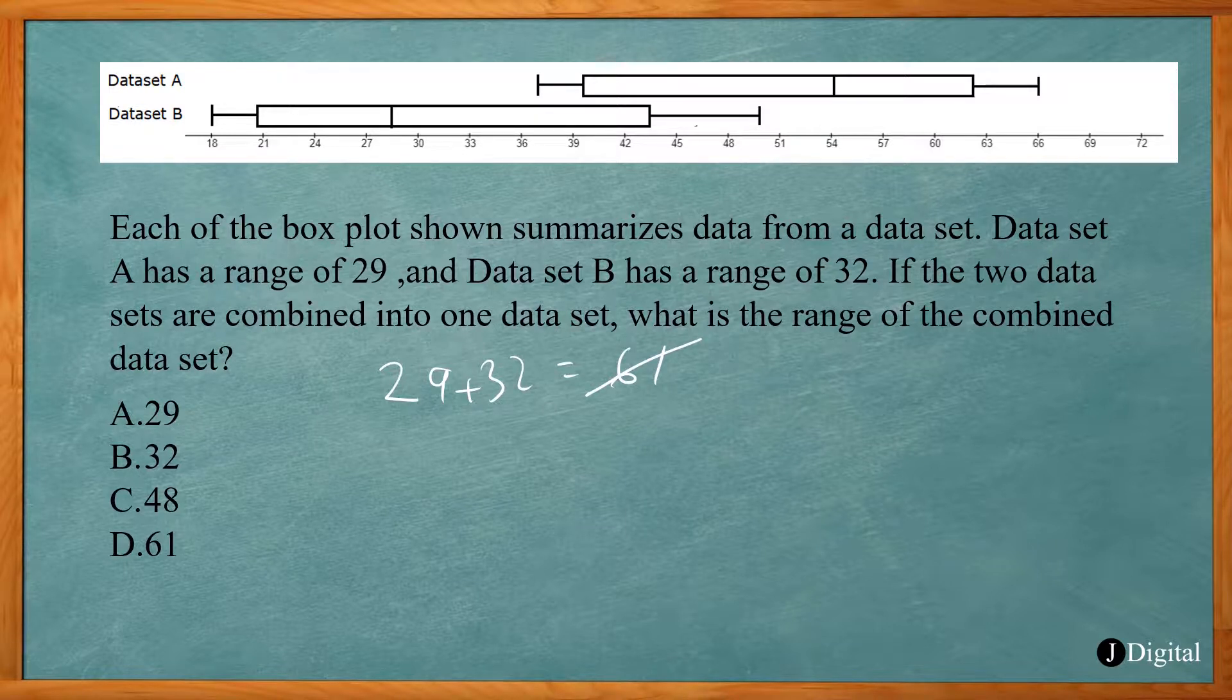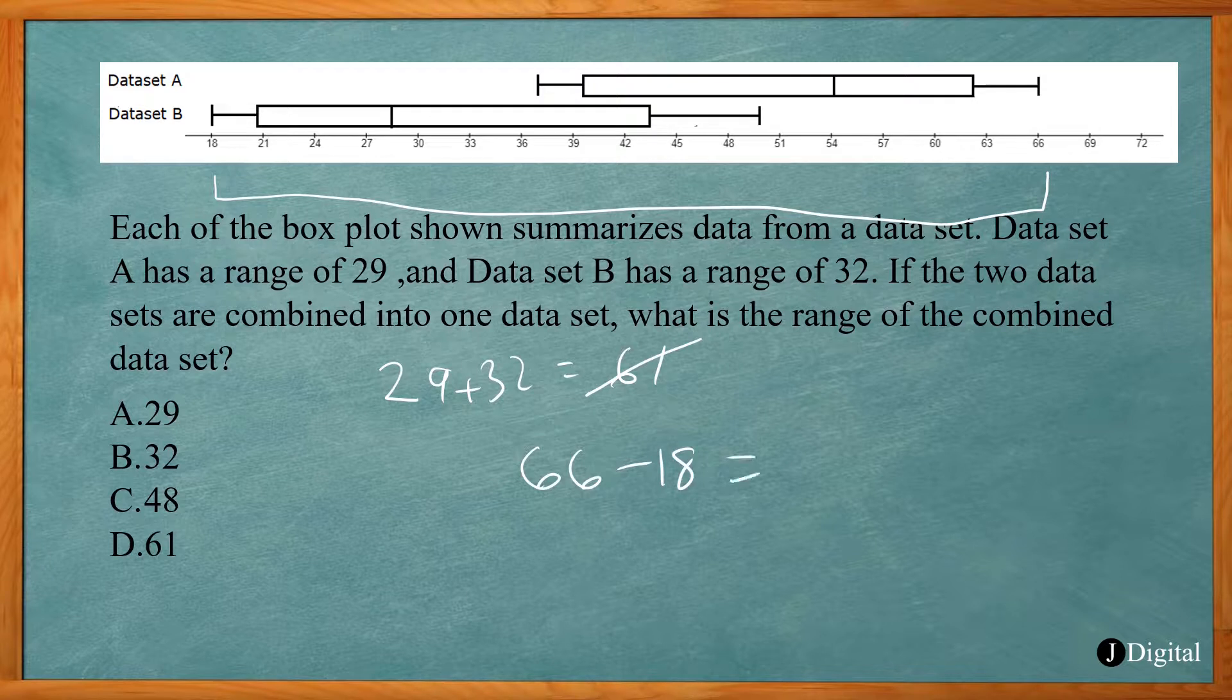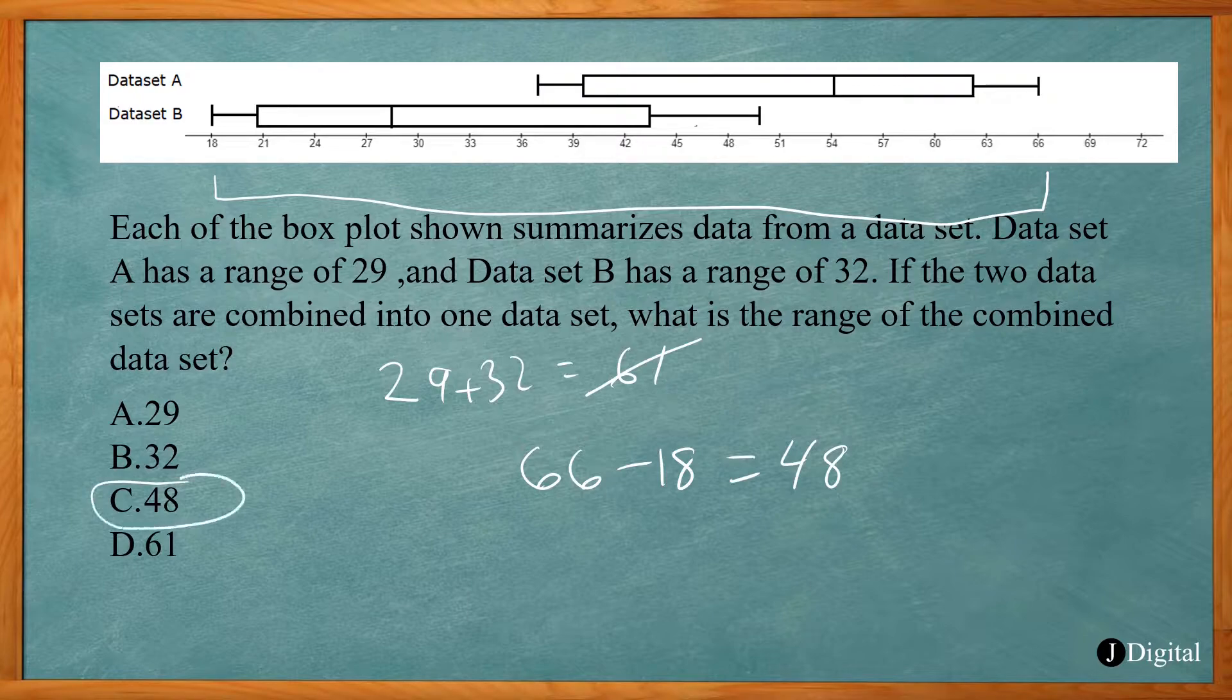So remember the range is the max value minus the minimum value. So that goes from 18... 16 to 66. So this is going to be 66 minus 18 which is 48. So the answer C is the correct value.